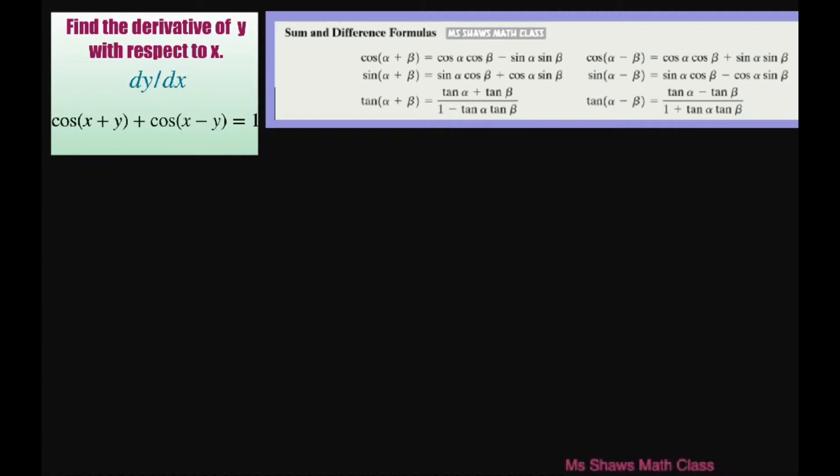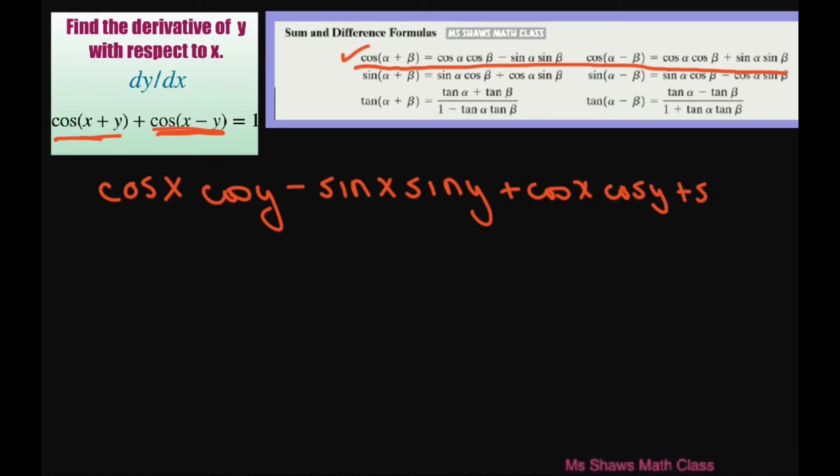Before we start this, let's simplify these expressions here using our sum and difference formulas for cosine. So basically for the first one I'm going to use this and write this as cosine of x times cosine of y minus sine of x sine of y. And then for the second piece we're going to have plus cosine of x cosine of y plus sine of x sine of y.